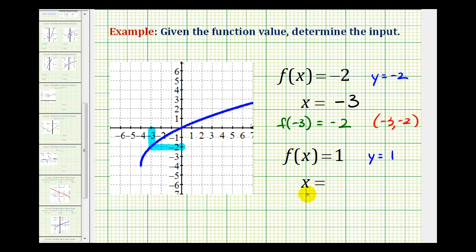We want to determine what x would have to be, or the input would have to be, when y is equal to one. So again, if we go to the y-axis, locate one here, go over to our function, we can see that when y is equal to one, x would have to be two.